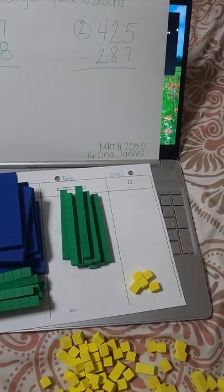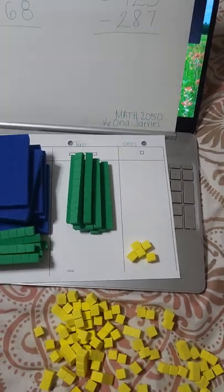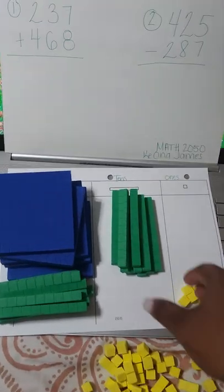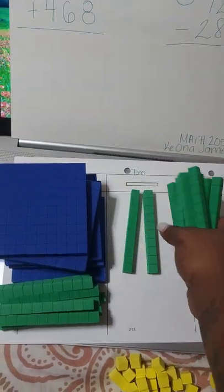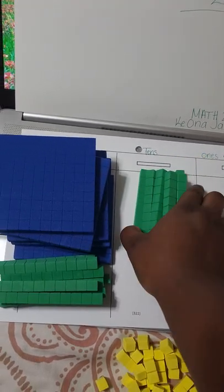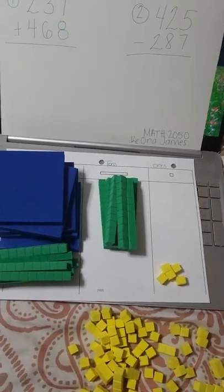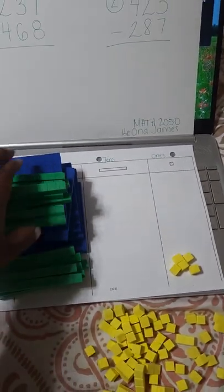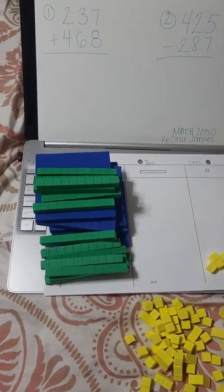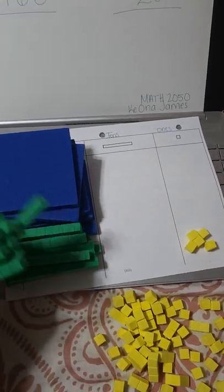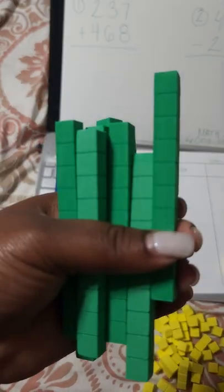We're going to add that ten we just took off into our tens place. Now we have one, two, three, four, five, six, seven, eight, nine, and ten tens — so ten tens equals one hundred. We're going to take our ten tens and shift over to our hundreds, so we know that we have two sets of ten here, and this is one hundred.